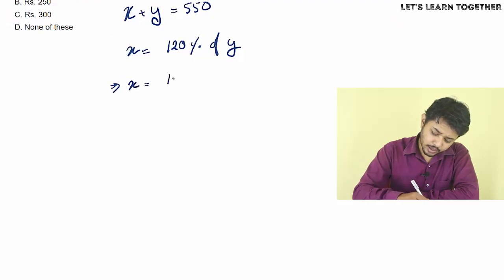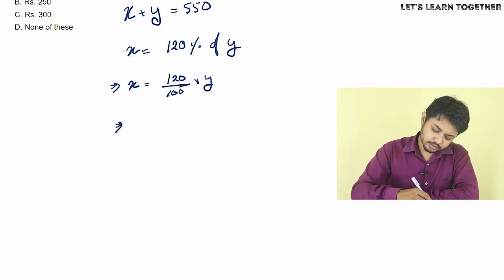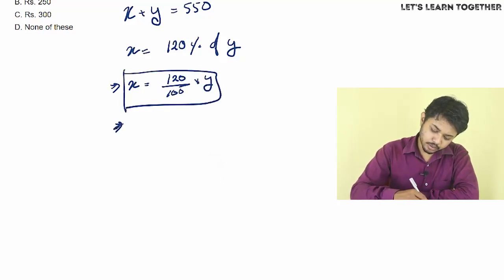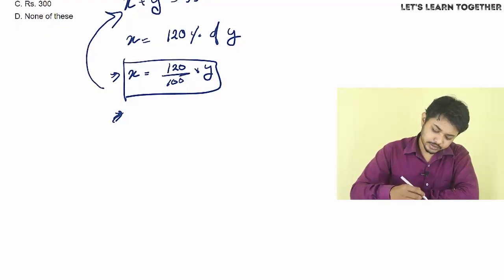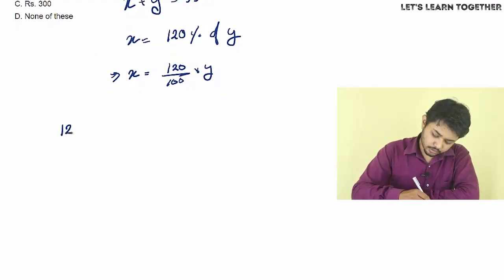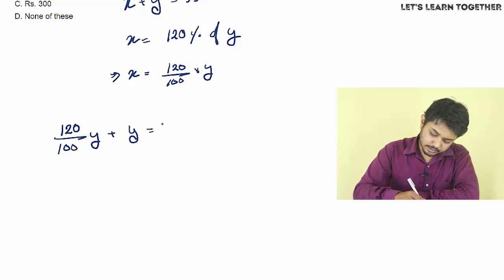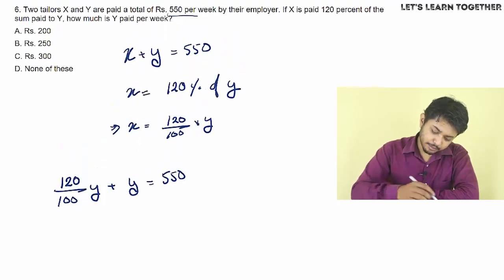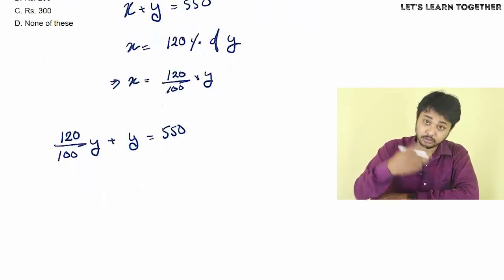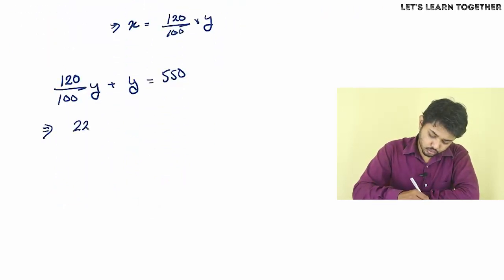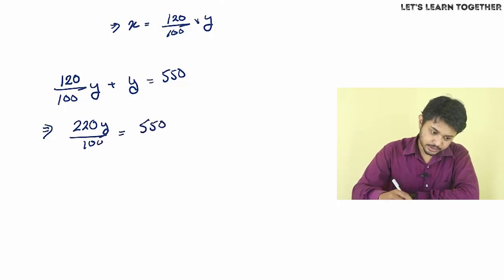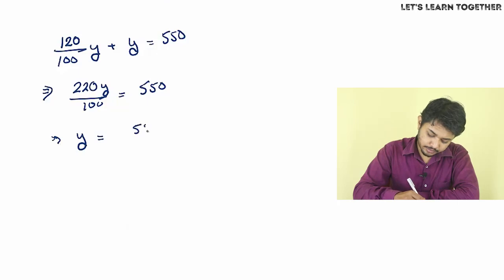X is equal to 120 by 100 into Y. So putting this into the equation: 120 by 100 Y plus Y is equal to 550. Solving, Y is equal to 550 into 100 by 220.